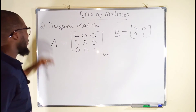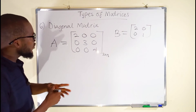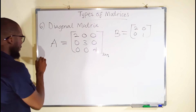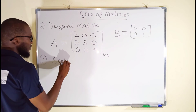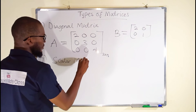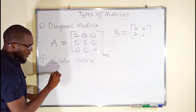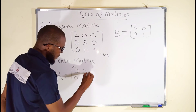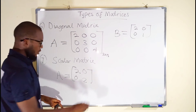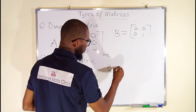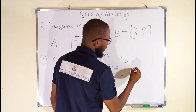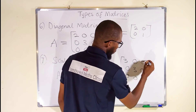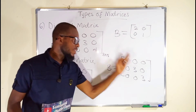There is another subset of the diagonal matrix which is a scalar matrix. A scalar matrix is also a diagonal matrix, but all the diagonal elements are equal. For example, if we have matrix A as [2, 0; 0, 2], you can see the diagonal elements are the same: two and two. Or even if it is a three-by-three matrix, you may have [3, 0, 0; 0, 3, 0; 0, 0, 3], where all other elements are equal to zero. This is a scalar matrix — all the diagonal elements are the same.